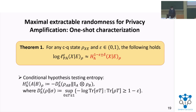For privacy amplification, we have found the one-shot characterization for maximal extractable randomness, which is shown in this theorem. The approximation symbols mean equality up to some logarithmic terms, and the entropy quantity here is the conditional hypothesis testing entropy, defined as follows.